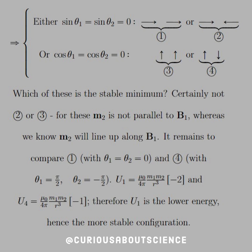All right, so which of these is a stable minimum? Now, this is where we have to do the little testing on the critical points. So it's certainly not 2 or 3, for M2 is not parallel to B1, whereas we know M2 will line up with B1. It remains to show or compare case 1 and case 4.